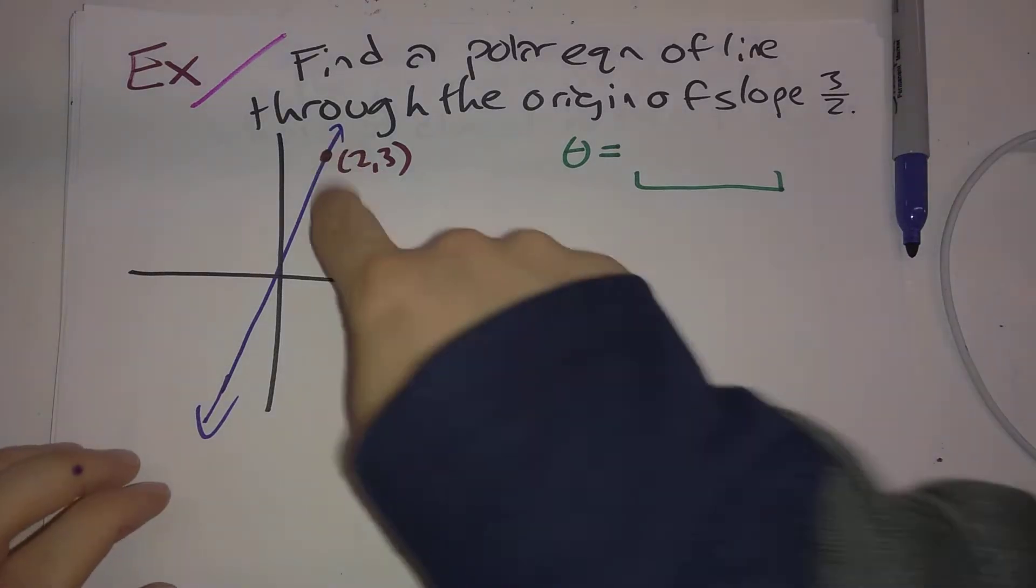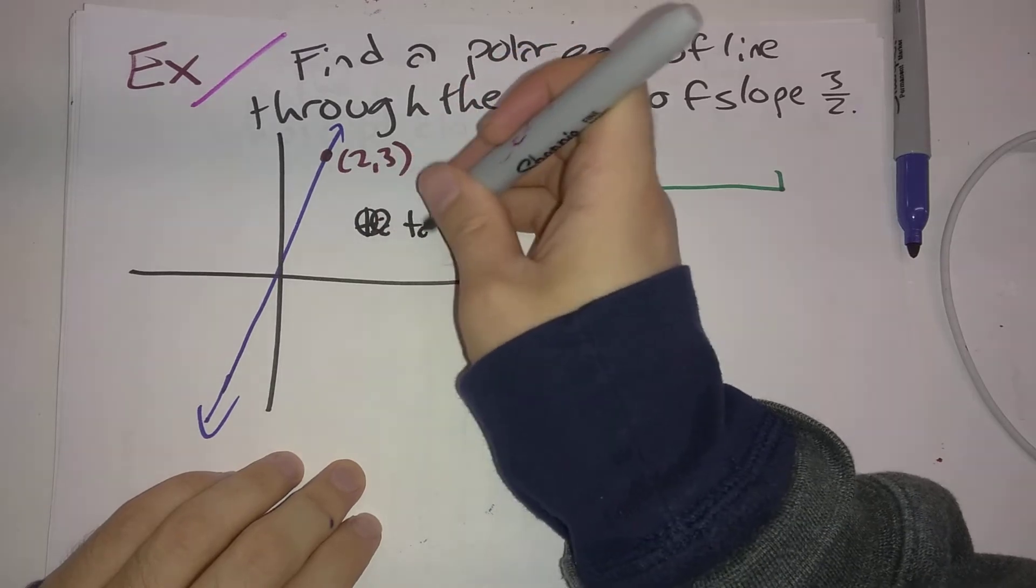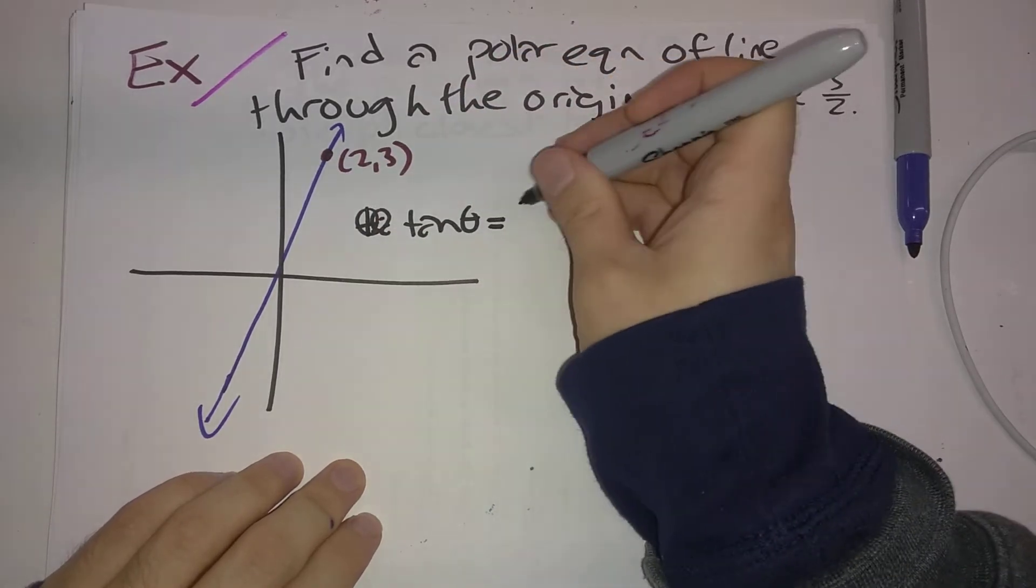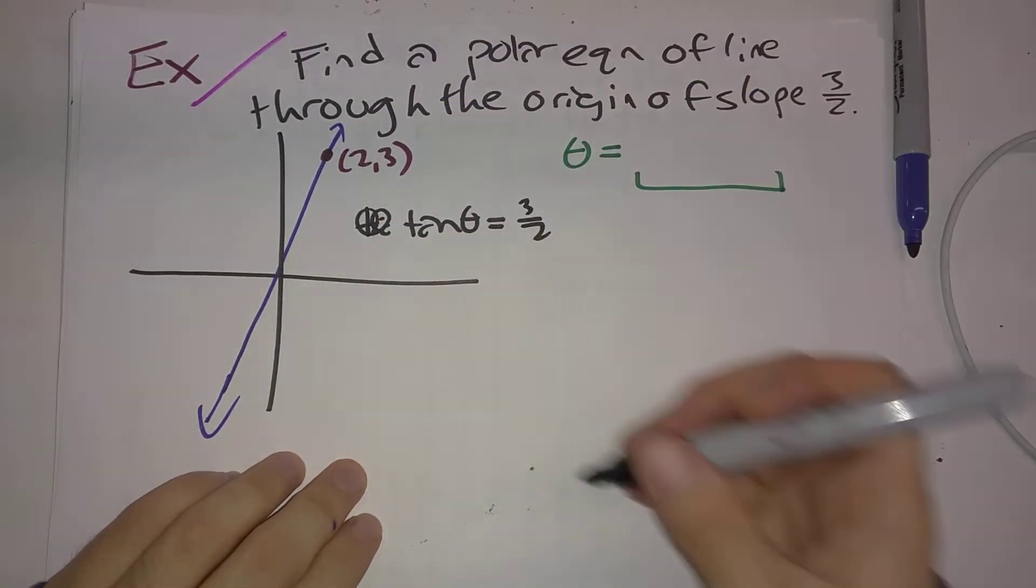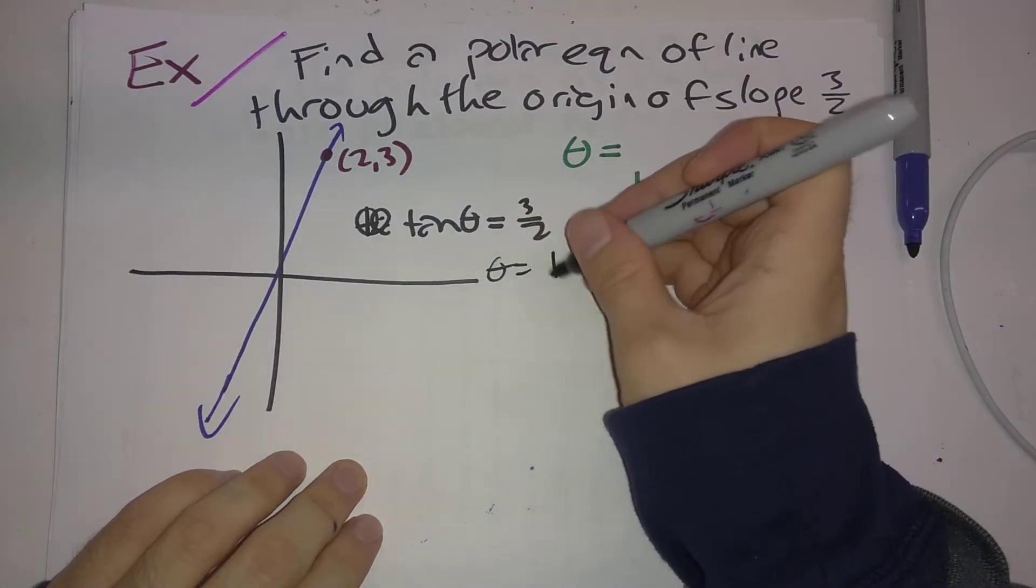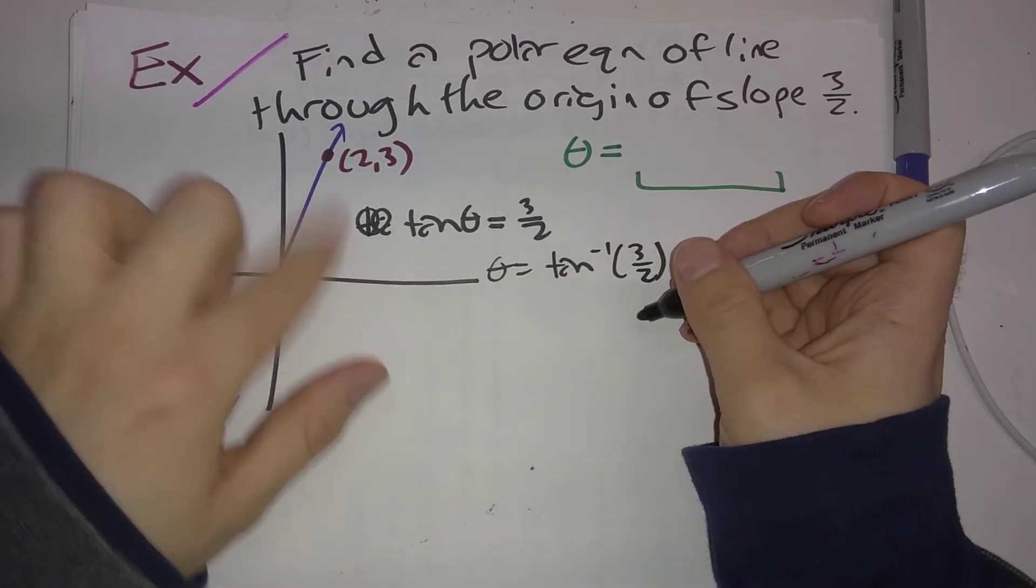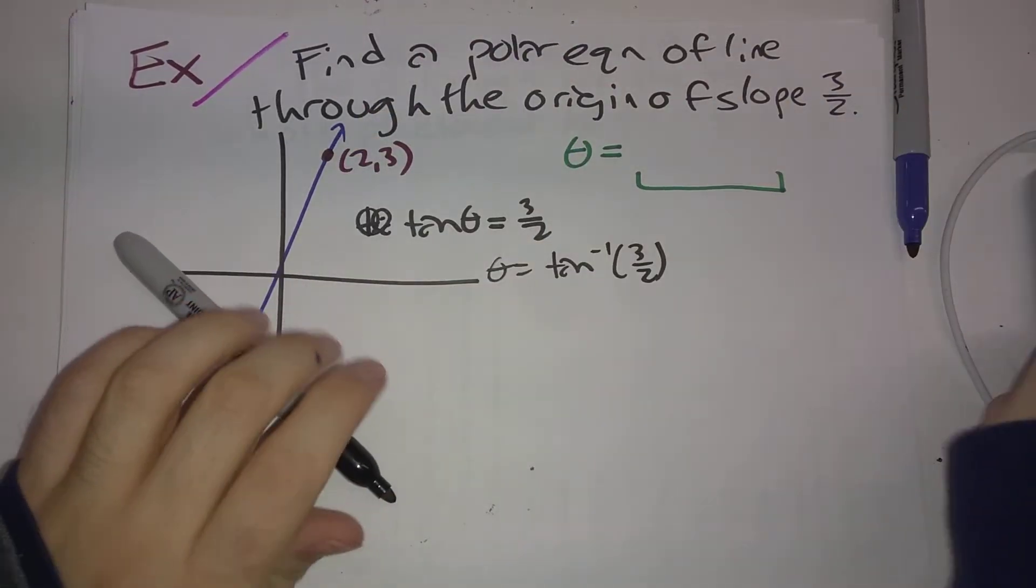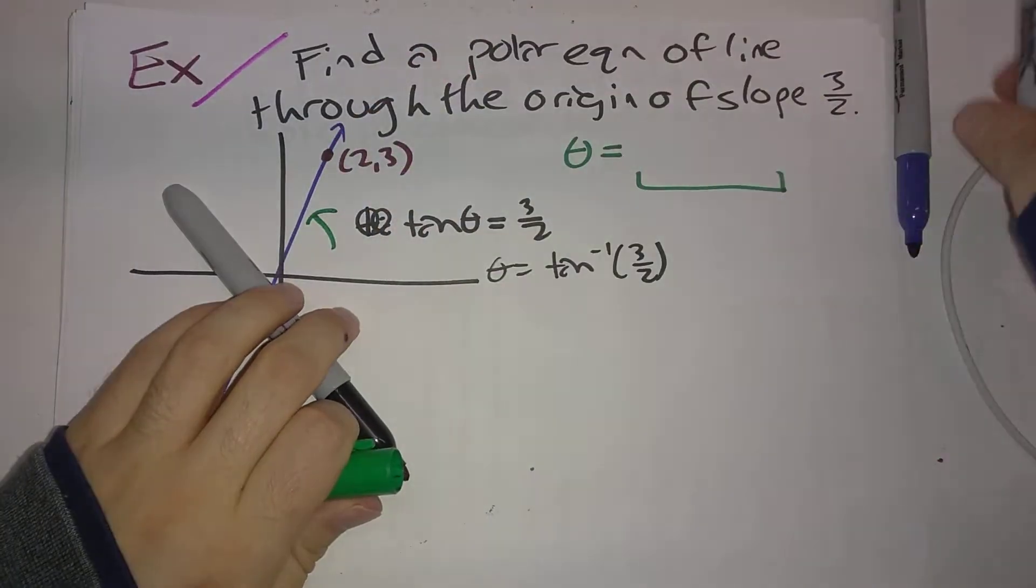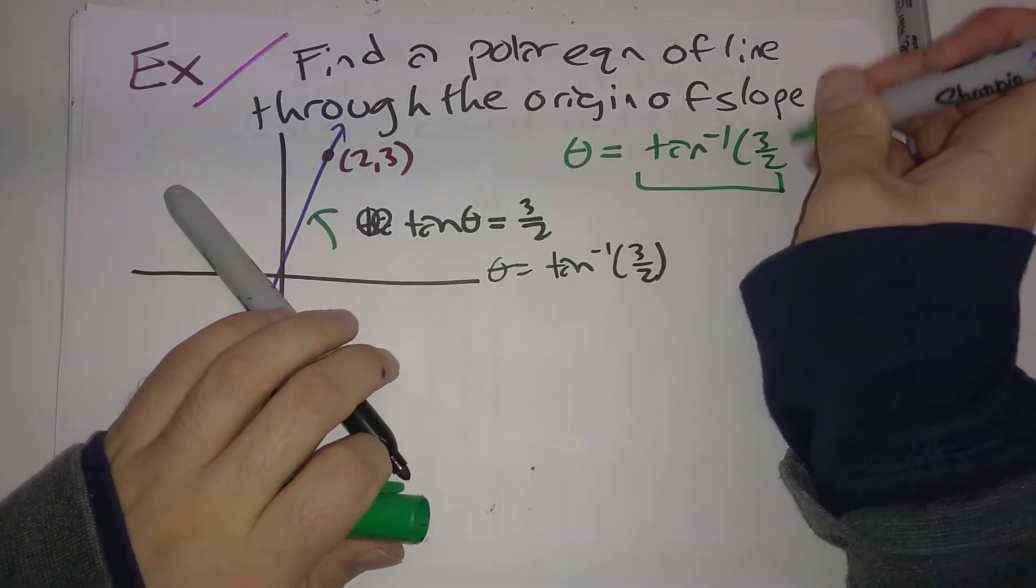So how do we do this? This is going to be tangent theta is equal to 3 halves, y over x there. So theta is going to be arc tangent of 3 halves. We're in, that checks out here for being the right quadrant to be in. So that's our final answer. That was pretty easy.